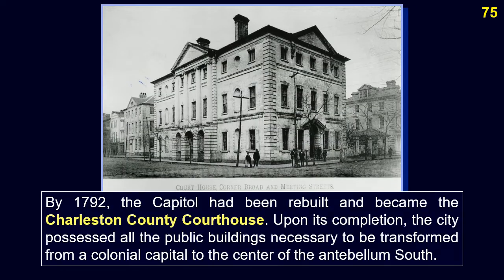By 1792, the capital had been rebuilt and became the Charleston County Courthouse. Upon its completion, the city possessed all the public buildings necessary to be transformed from a colonial capital to the center of the antebellum South. The grandeur and number of buildings erected in the following century reflect the optimism, pride, and civic destiny that many Charlestonians felt for their community.